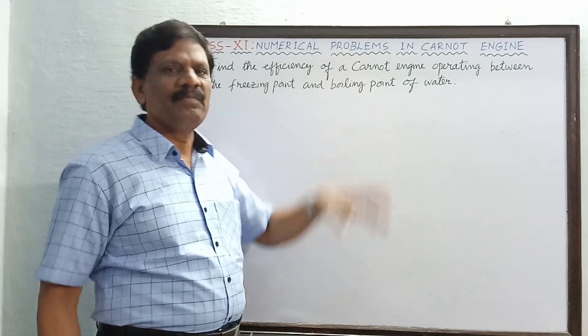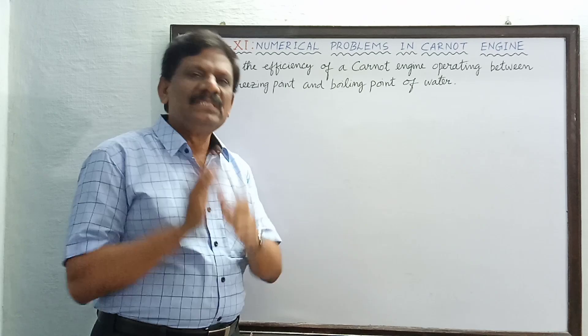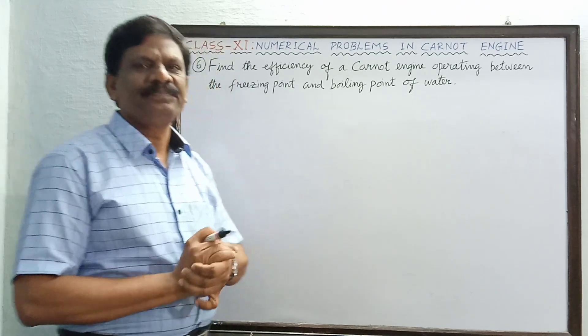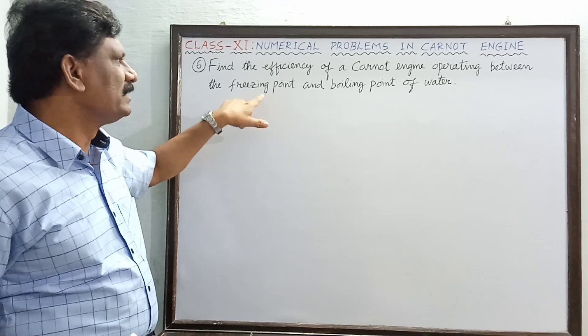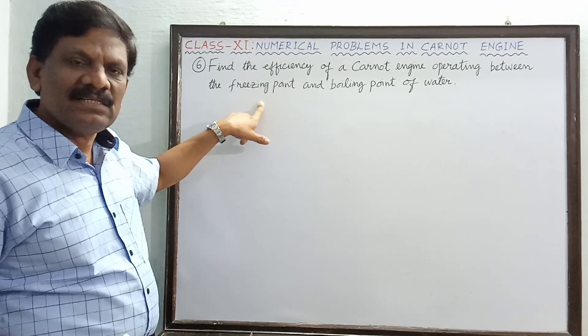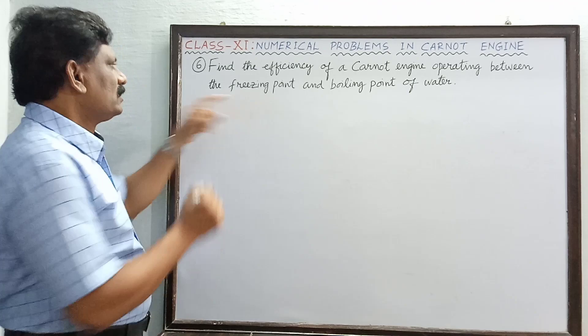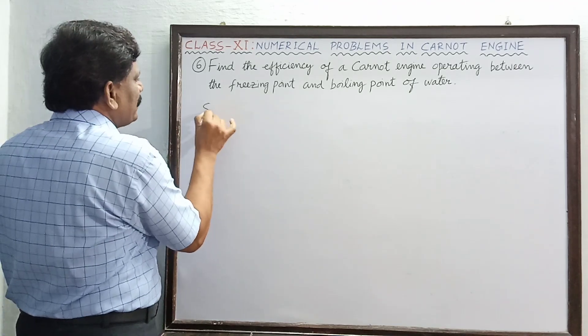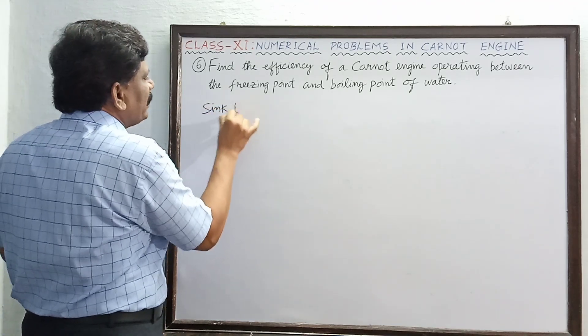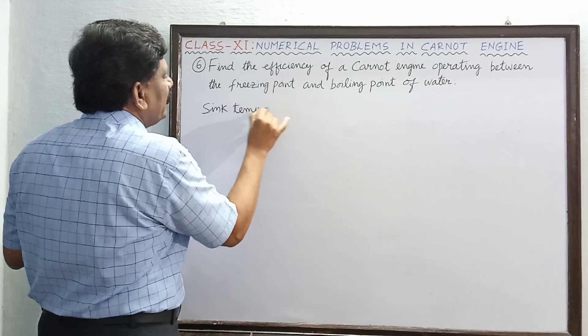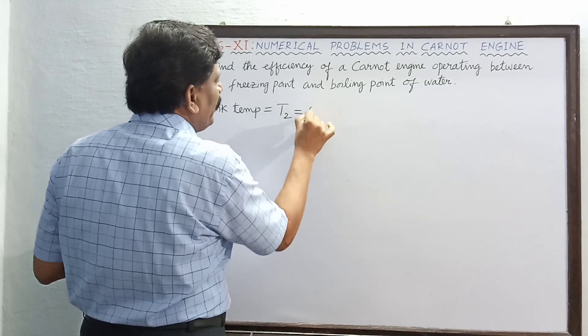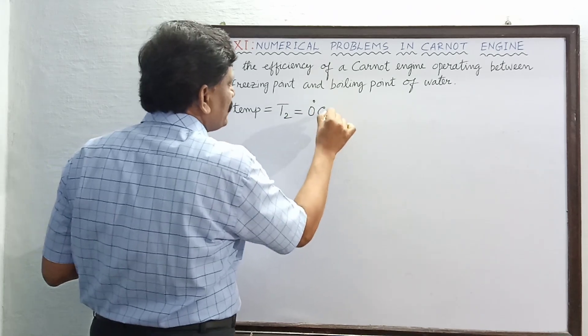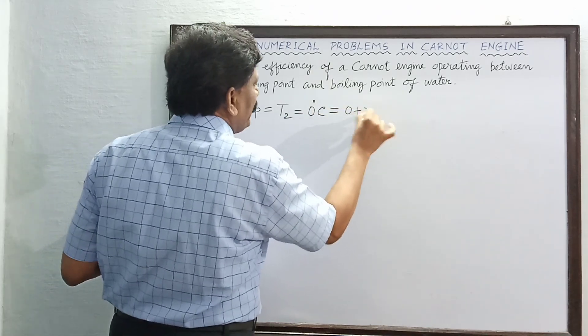Which is the lesser temperature? Yes, the freezing point is the lesser temperature, so this must be the temperature of the sink. So sink temperature is denoted by the symbol T2, and that is equal to the freezing point, that is zero degrees Celsius. So this is zero plus 273, equal to 273 K for Kelvin.